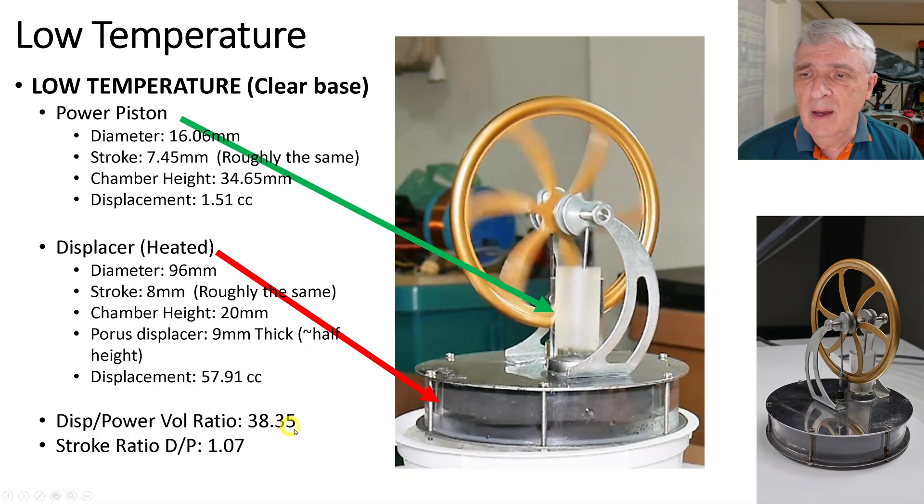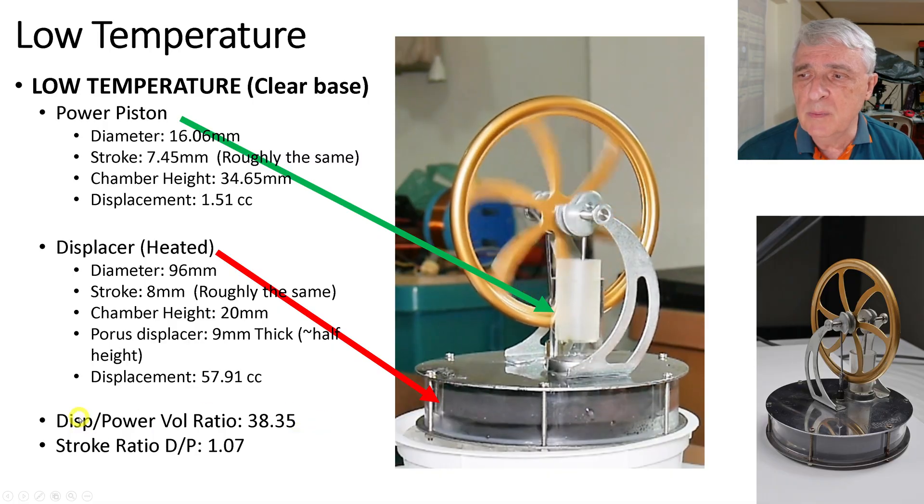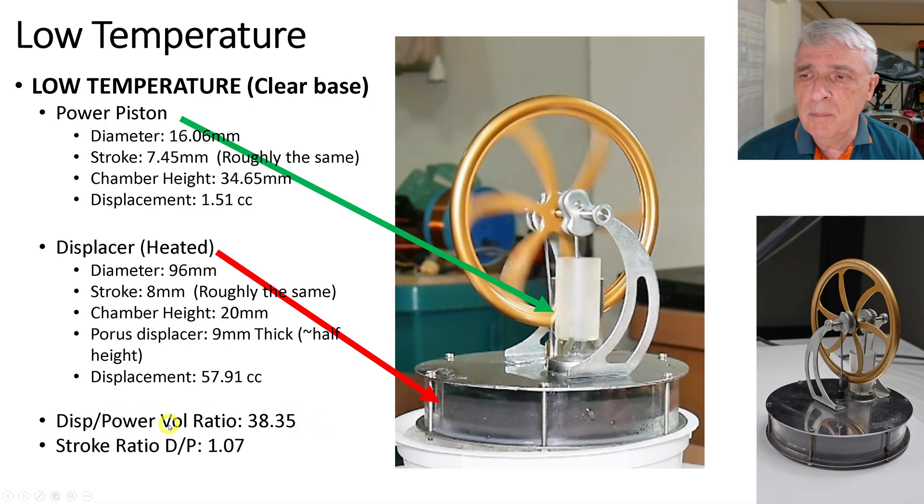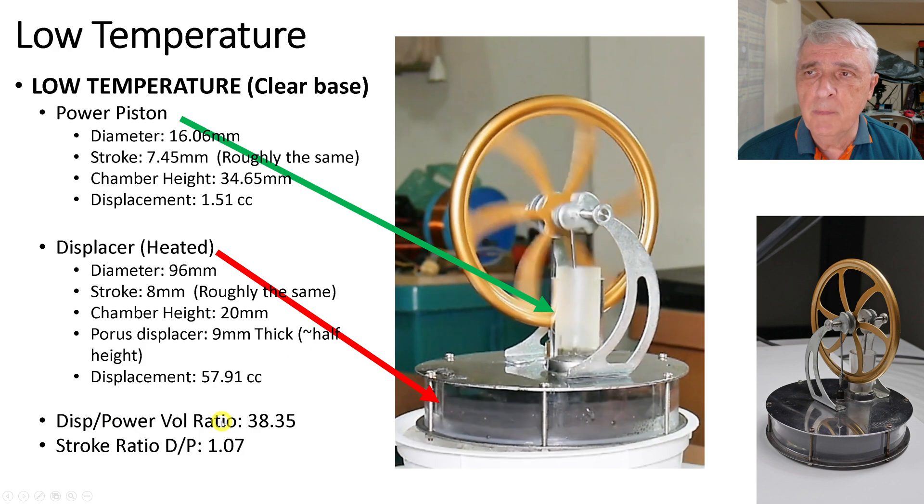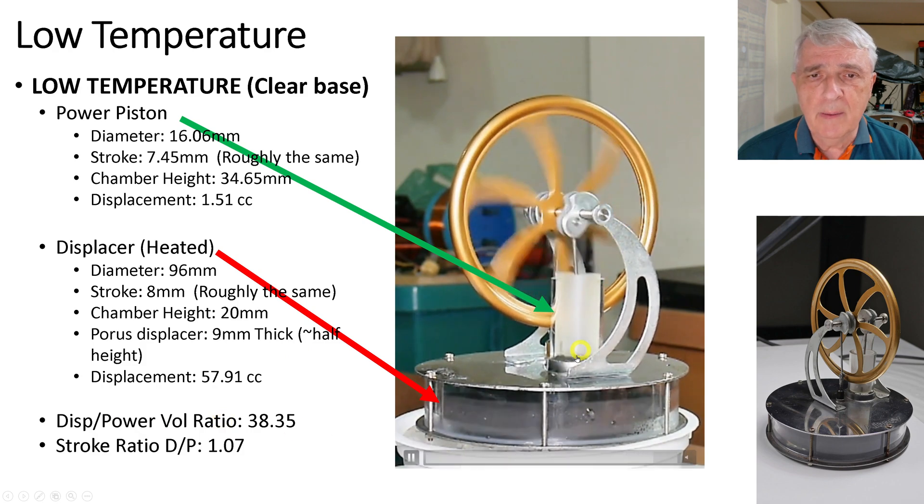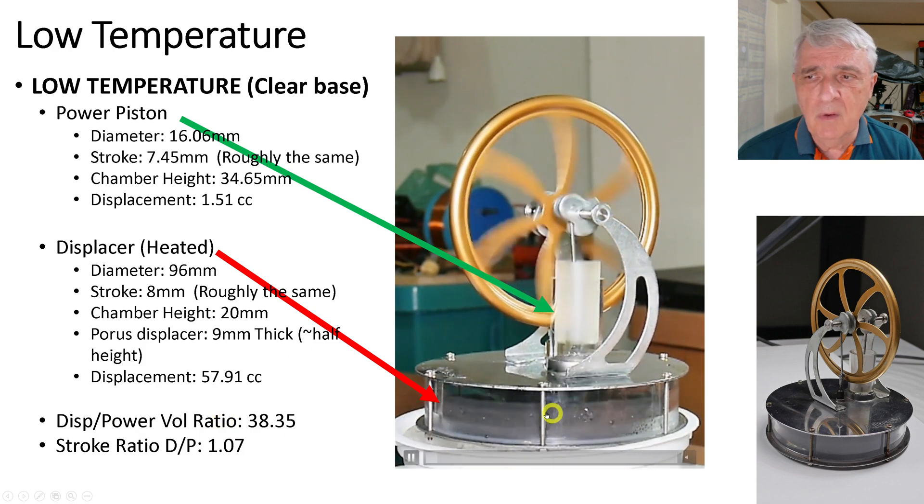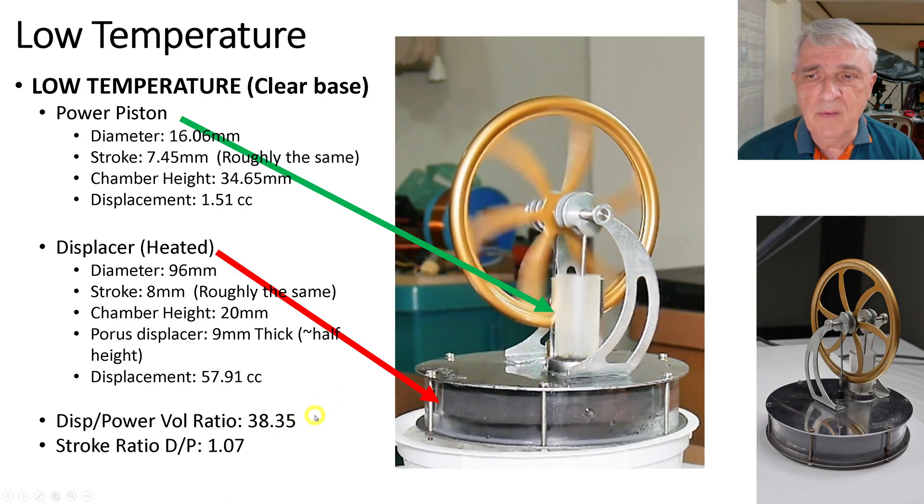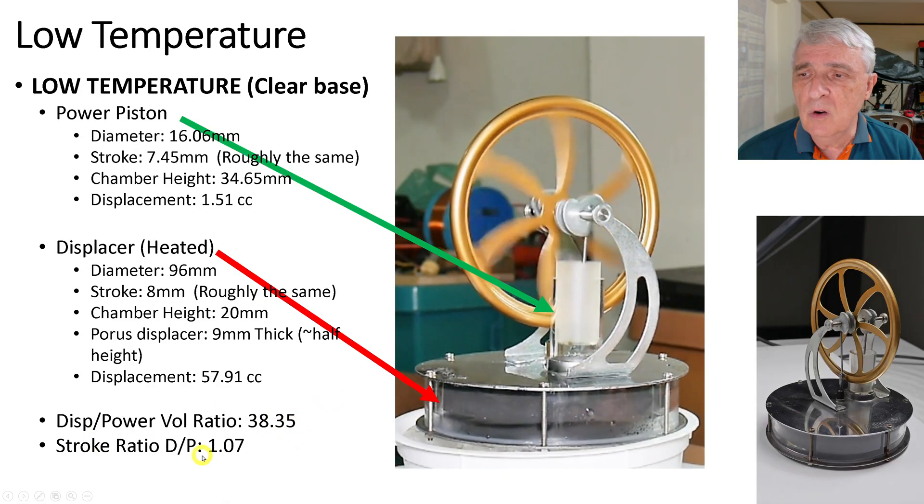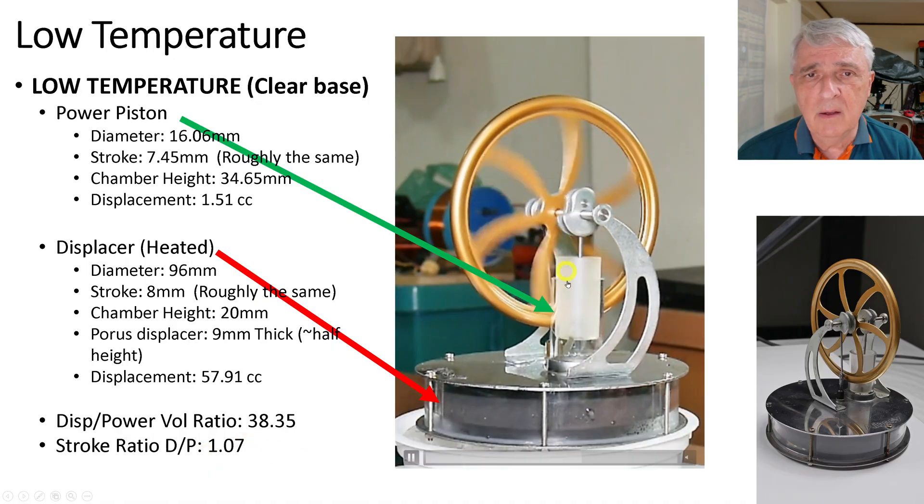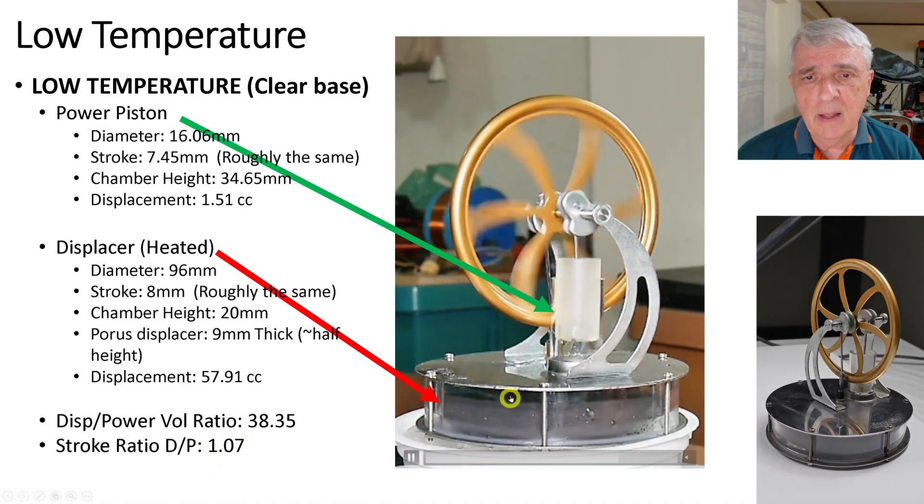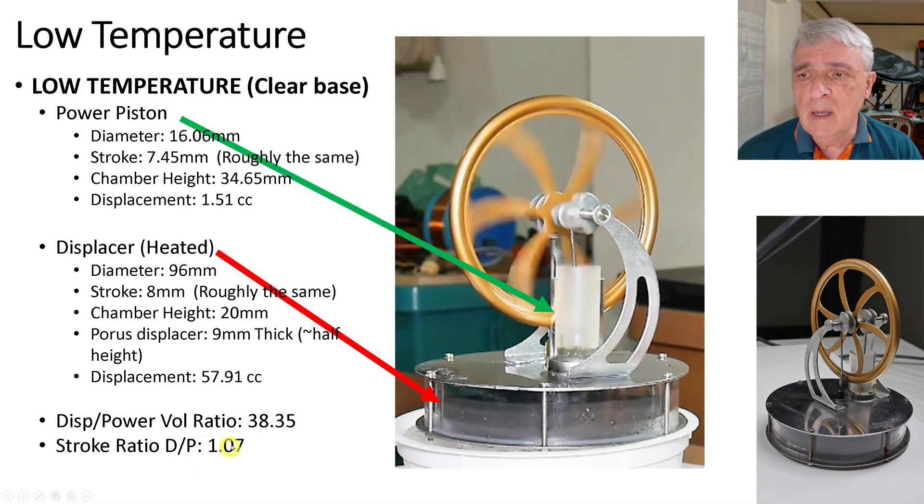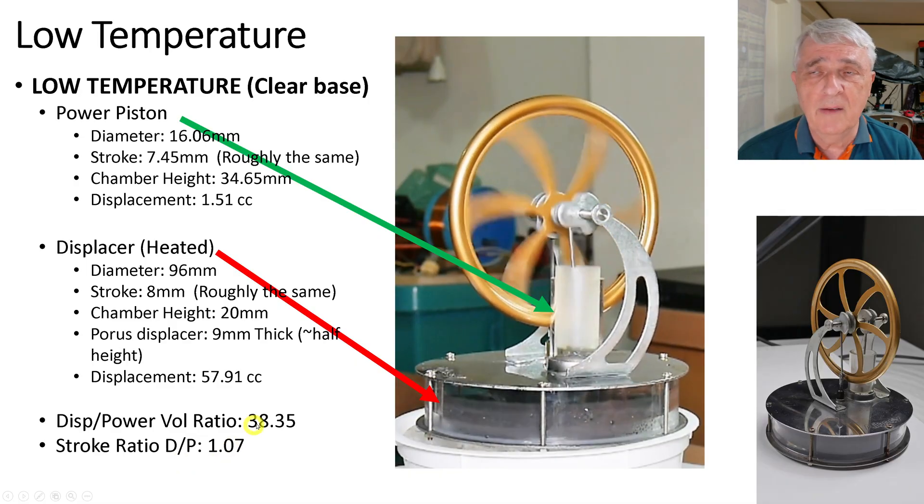One of the things I thought would be interesting is the displacement to the power volume ratio. So that is the volume of this compared to the volume of this. In this one, it is 38.35. The stroke ratio, which is the up and down of the power and the up and down of the displacer, is 1.07.